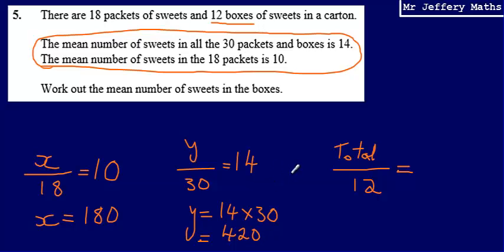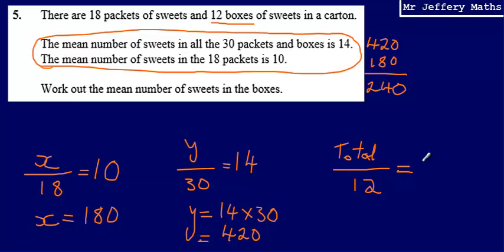So there were 420 sweets in the packets and boxes combined. I know there were 180 in just the packets, which means the total number of sweets in the boxes is 420 minus 180, giving 240. Then 240 divided by 12 gives an answer of 20. So the mean number of sweets in the boxes is 20.